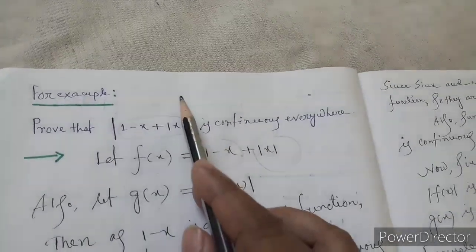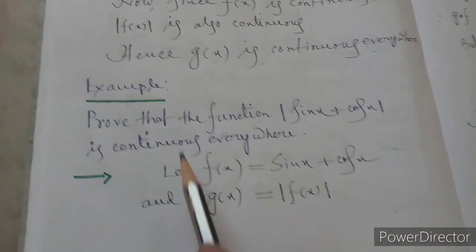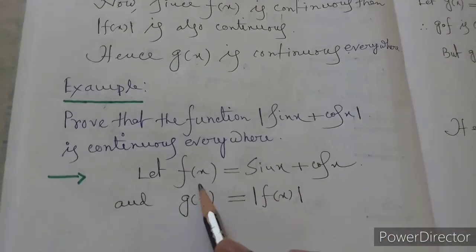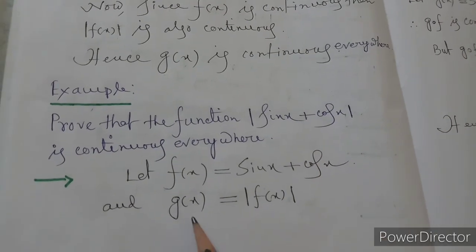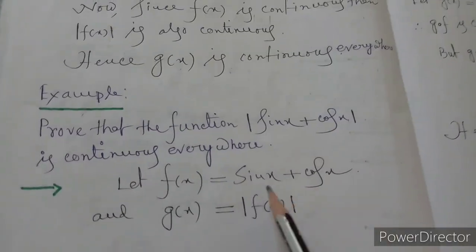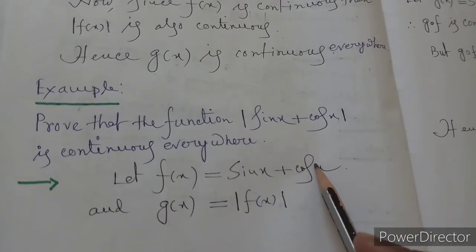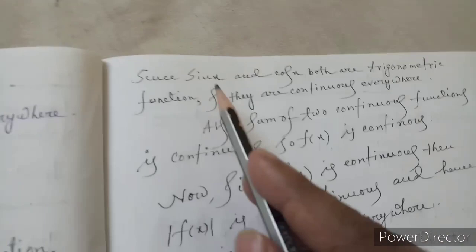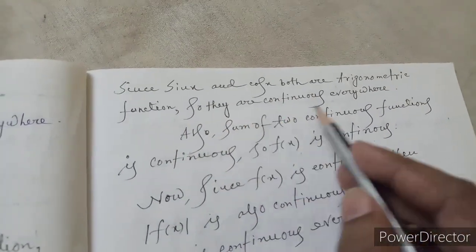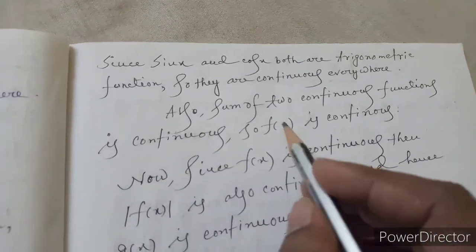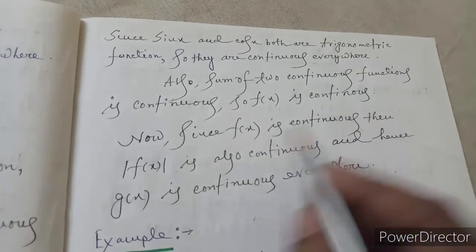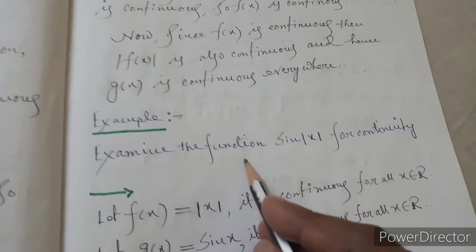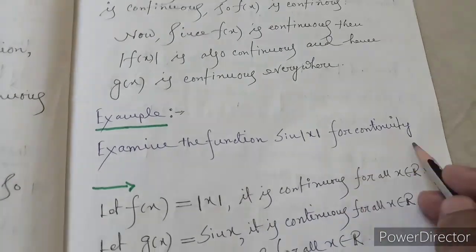Example two: prove that mod of (sin x plus cos x) is continuous everywhere. Let f(x) equal sin x plus cos x, and g(x) equal mod of f(x). Since sin x and cos x are both trigonometric functions, they are continuous everywhere. The sum of two continuous functions is continuous, so f(x) is continuous. Since f is continuous, mod f(x) is also continuous, hence g(x) is continuous everywhere.